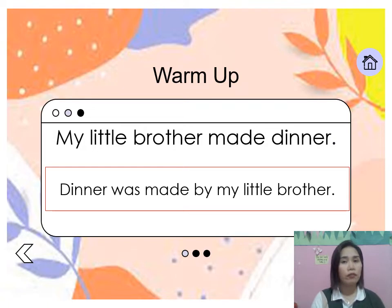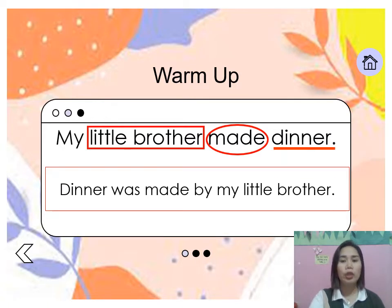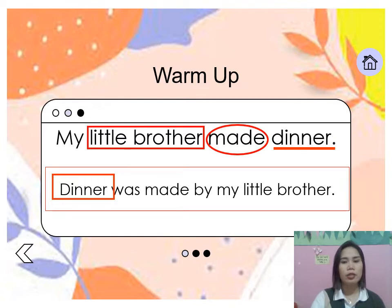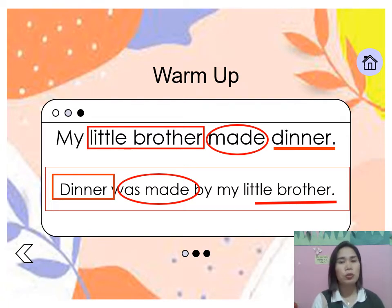In the first sentence, 'little brother' is the subject, 'made' is the verb, and 'dinner' is the object or receiver of the verb. In sentence number two, 'dinner' is the subject, 'was made' is the verb, and 'little brother' is now the object or receiver. So what have you noticed with these two sentences?